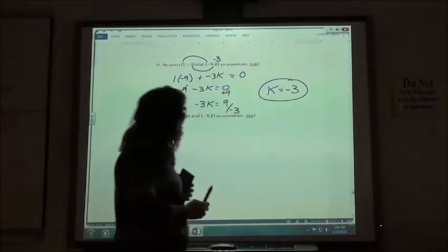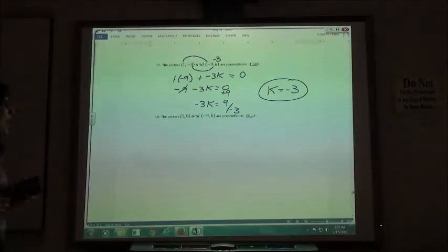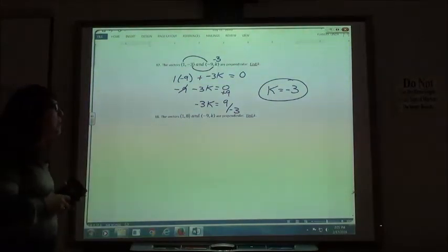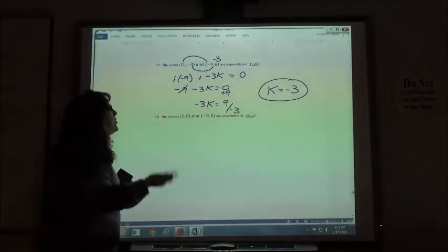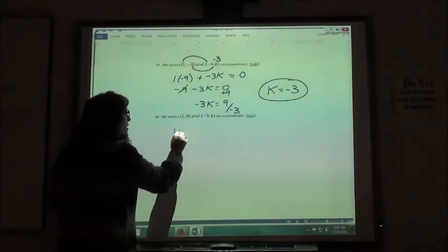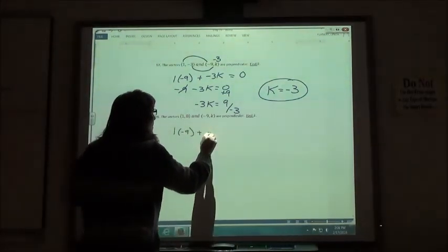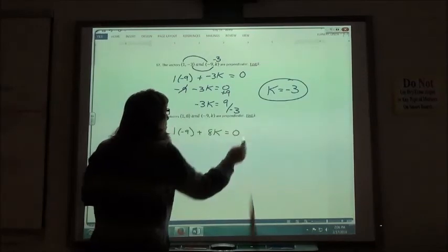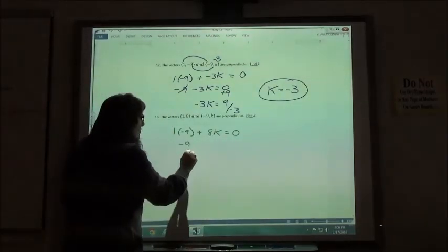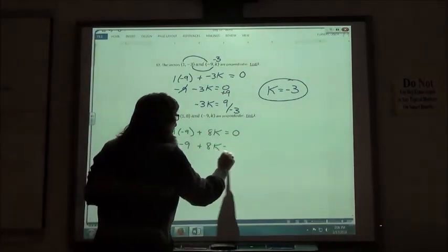And the last one, same thing, I have the vector 1, 8, and negative 9, k. I want them to be perpendicular, so their dot product has to equal 0. So 1 times negative 9 plus 8 times k equals 0. Negative 9 plus 8k equals 0.